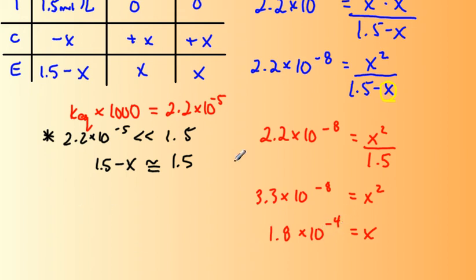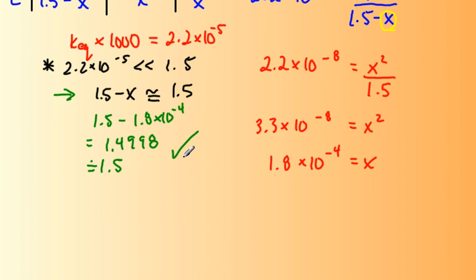So now I want to just, before we go on and do something with X, I want to come back over to this expression over here. So we compared Keq times a thousand to the initial concentration. It was much smaller than the initial concentration. So we make this assumption here that 1.5 minus X is approximately equal to 1.5. So let's check that out. 1.5 minus X. We've just determined that X is 1.8 times 10 to the minus 4. And if you do that subtraction, we get 1.4998. And that is approximately equal to 1.5. So our assumption here is pretty good. We have another way we can check it in a minute. But this is sort of proof for your eyes that if X is small, this subtraction will give us 1.5.